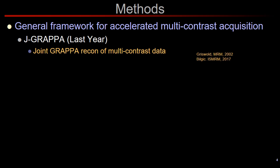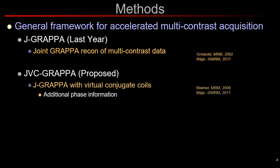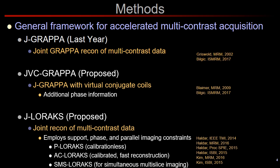We proposed the Joint GRAPPA technique at last year's ISMRM to jointly reconstruct multi-contrast images. In this paper, we have expanded this to Joint Virtual Coil GRAPPA to exploit additional phase information using the virtual coil concept. We are also proposing Joint LORAX, which enables joint reconstruction across multiple contrasts by exploiting support and phase constraints as well as sensitivity encoding.